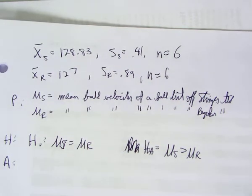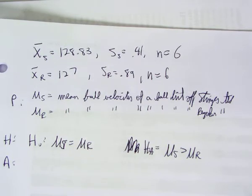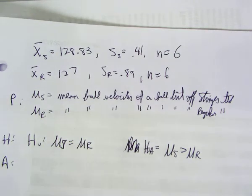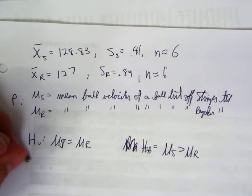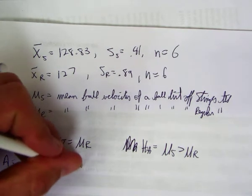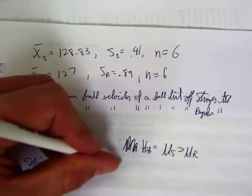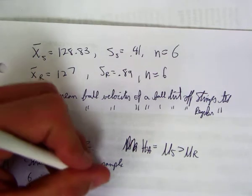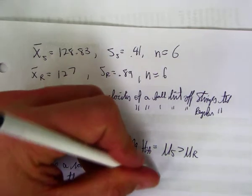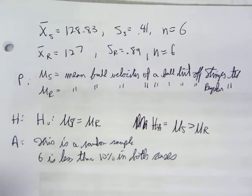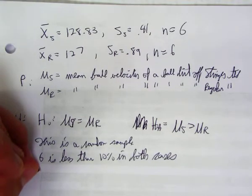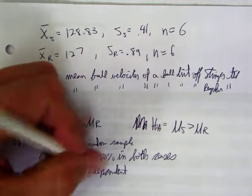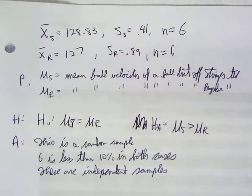Assumptions and conditions. Okay, so this is a random sample. Six is less than 10% in both cases. And these are independent samples.